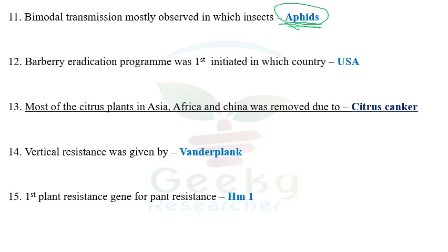The twelfth question: the Barberry eradication program was first initiated in the USA. Don't get confused with France, which initiated a Barberry eradication program in 1660 — that is not the first official one. The first official Barberry eradication program was started in the USA in 1918. From 1918 to 1970, millions of Barberry plants were eradicated across Minnesota, as Barberry is an alternate host for wheat stem rust.